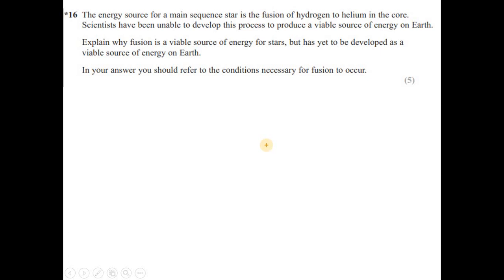The energy source for a main sequence star is the fusion of hydrogen to helium in the core. Scientists have been unable to develop this process to produce a viable source of energy on Earth. Explain why fusion is a viable source of energy for stars but has yet to be developed as a viable source of energy on Earth. In your answer, you should refer to the condition necessary for the fusion to occur.